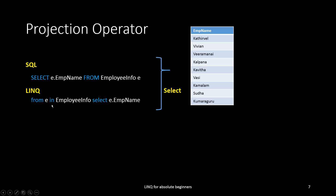From e, where e is the alias name — assume we are having a list collection with employee information. Then we are going to select the employee name from employee info. The result will show only the employee names from the data table. We can store it in the result as a var type variable or a list of string.